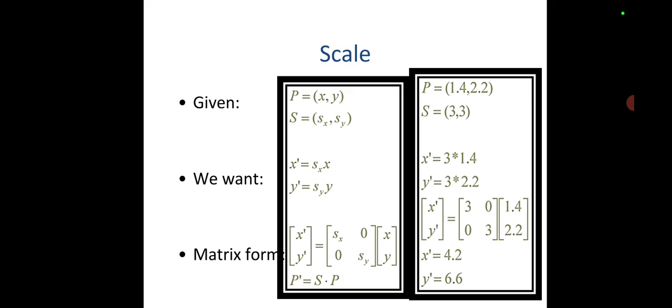We will see one example. P is given as a point at 1.4 and 2.2. Scale factor will be 3 and 3. Here we are getting uniform scaling. So X' we get as S into P like 3 into 1.4. Y' equals Sy into Y, that is 3 into 2.2. When we perform the multiplication, we get X' equals 4.2, Y' equals 6.6. Thank you.